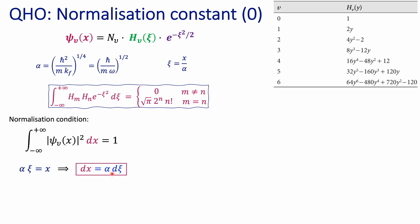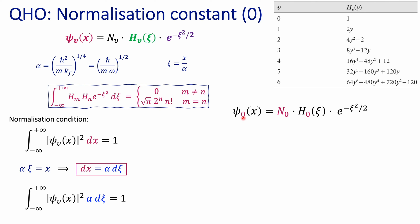Don't forget: when changing the variable to chi, keep the alpha factor. The normalization condition, when integrating over the reduced coordinate chi, becomes this expression — pay attention to this value of alpha. At the end of the day, integrating over all space should be equal to 1.